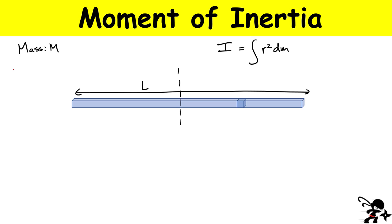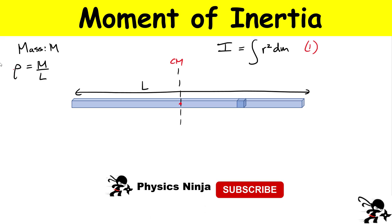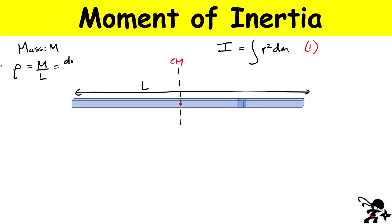Let's consider case one. I have my axis going through the center of mass, which is right in the middle because I have a uniform beam. The total mass of the beam is M. Since it's uniform, the linear density can be written as mass divided by length — it's a one-dimensional object. We can also write that as dm over dr, where dr is the small infinitesimal length element and dm is the corresponding infinitesimal mass. Next I want to start substituting everything into the moment of inertia integral.